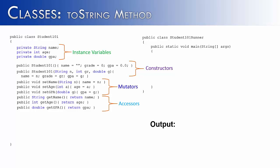We have been looking at different parts of a class, and that includes instance variables, constructors, mutators, and accessor methods. In this video, I'd like to look at one more part of a class, and that is the toString method. But before I do that, I want to give you an example.